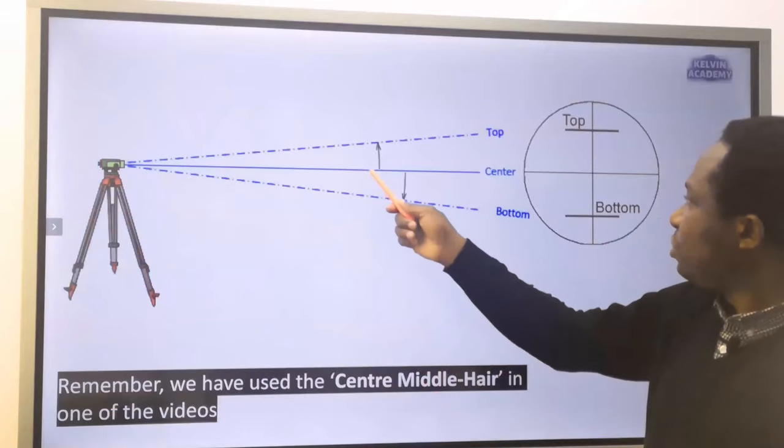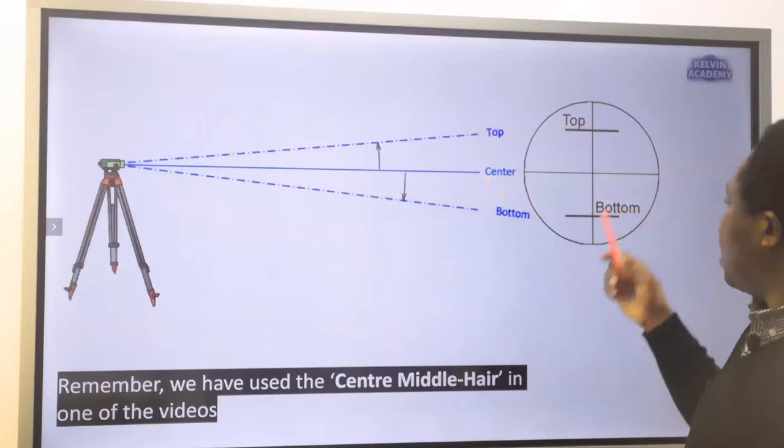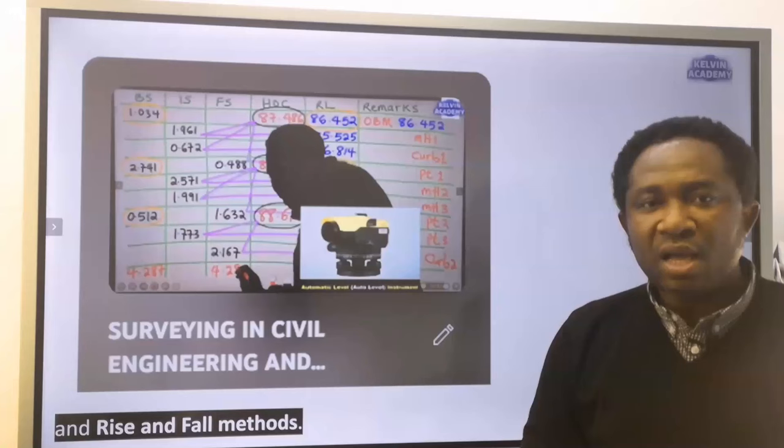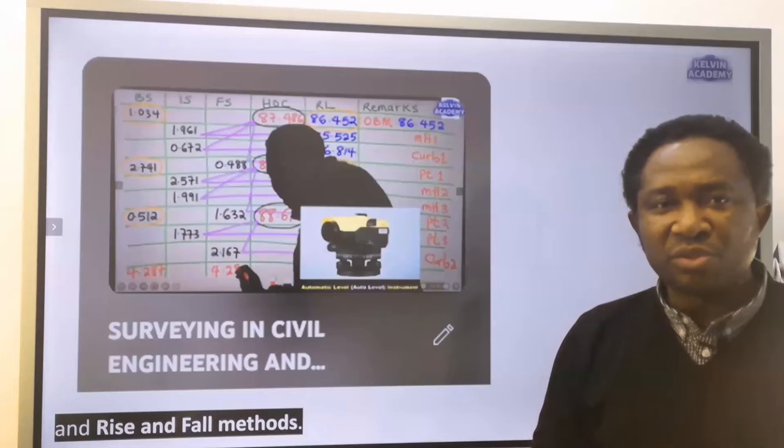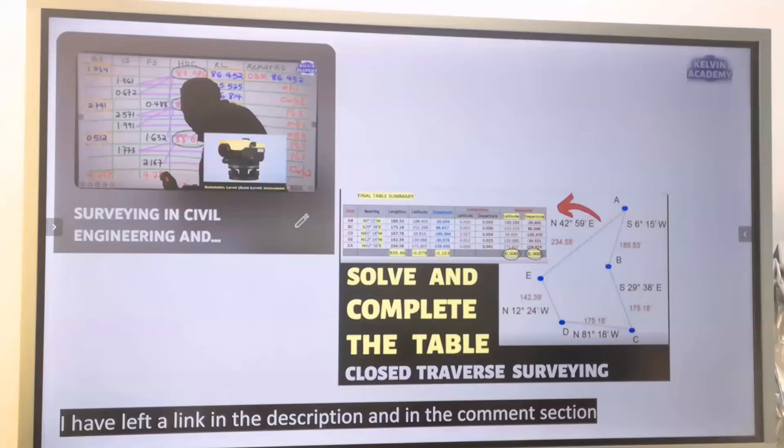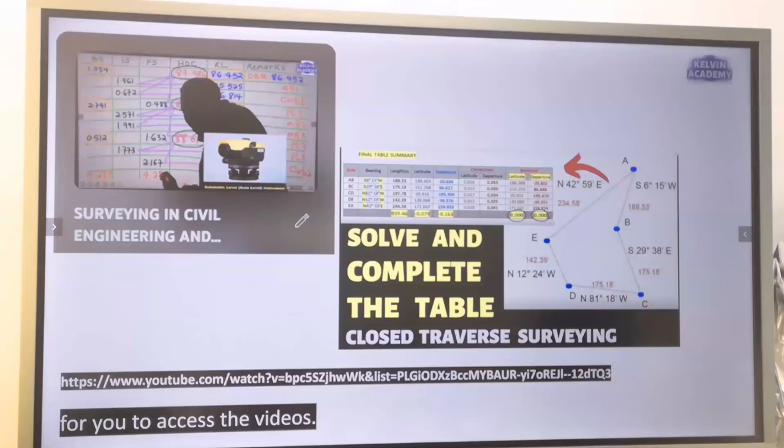Remember, we have used the central middle hair in one of the videos to learn how to calculate height of collimation and rise and fall methods. Also check out how to calculate for closed traverse surveying. I have left a link in the description and in the comment section for you to access the videos.